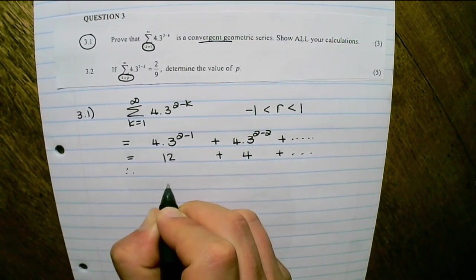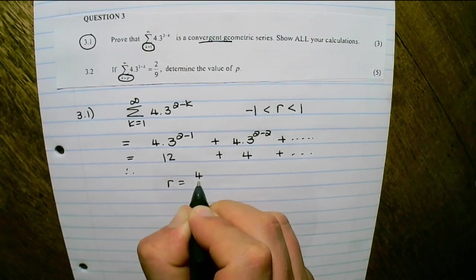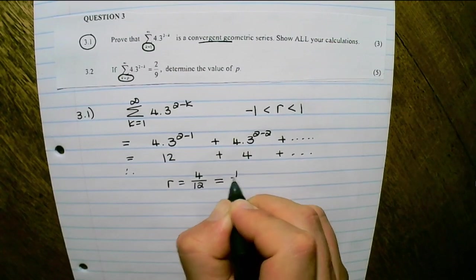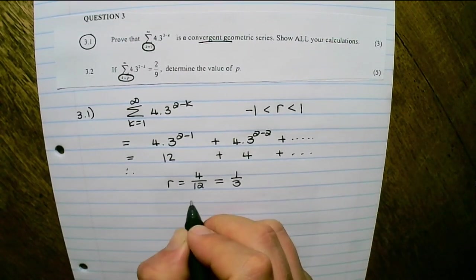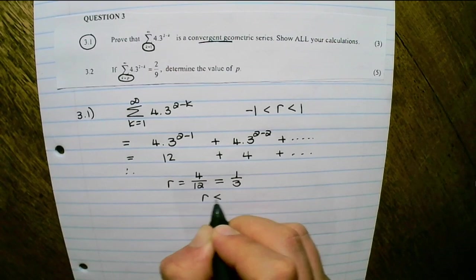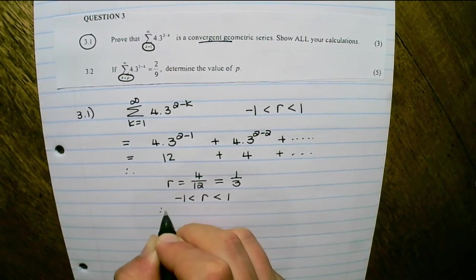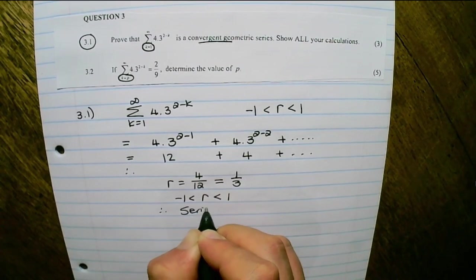Therefore, the ratio is 4 divided by 12. And if I simplify, that is 1 third. So the ratio is between 1 and negative 1. Therefore, the series is convergent.